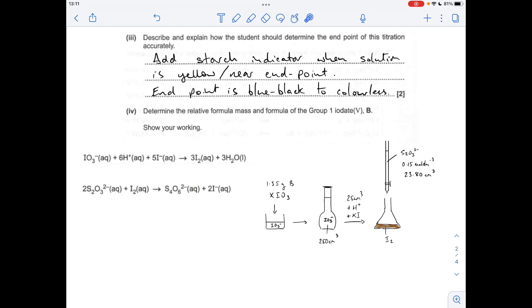Describe and explain how the student could determine the end point of this titration accurately. When the students carried out this reaction, they've taken the IO₃⁻ ions from the solid that they dissolved, reacted it with acid and an excess of iodide ions. That's that reaction there - they generate iodine.